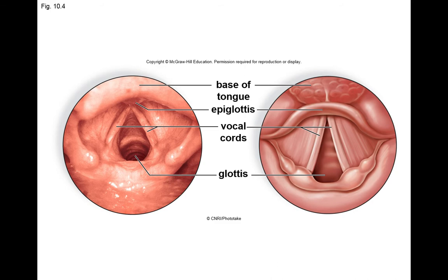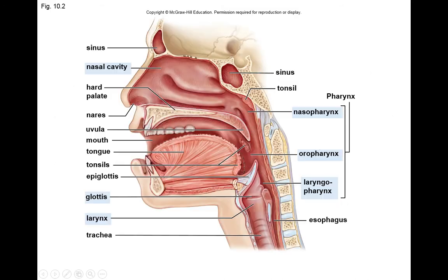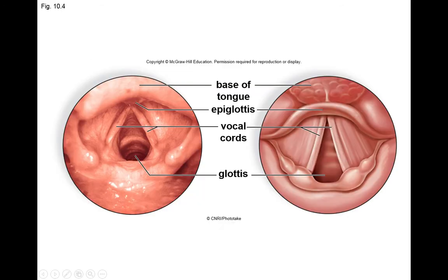The epiglottis is that flap of cartilage that closes the larynx and closes off the vocal cords in the passageway to the airways. The glottis is the space between the vocal cords, with the vocal cords on either side.